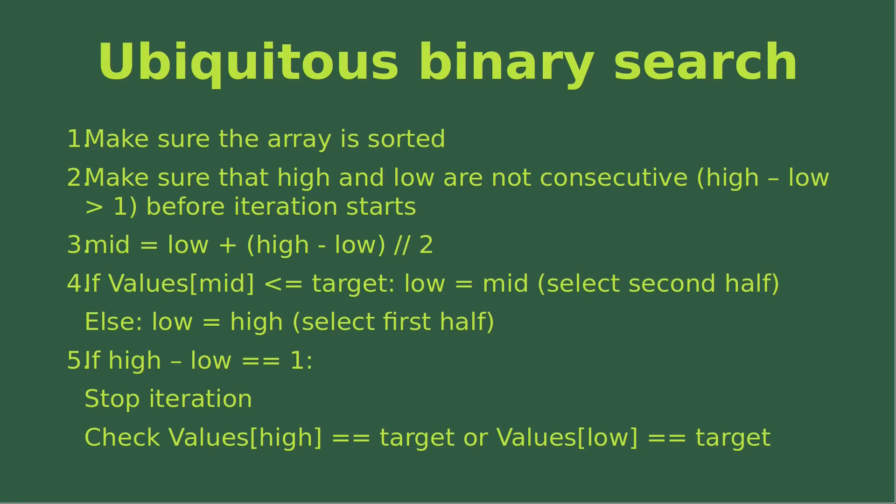When will I stop the iterations? It happens when the high index minus the low index equals exactly one. In that case, I stop the iteration and check the value corresponding to the high index or the low index to see if either corresponds to the target.